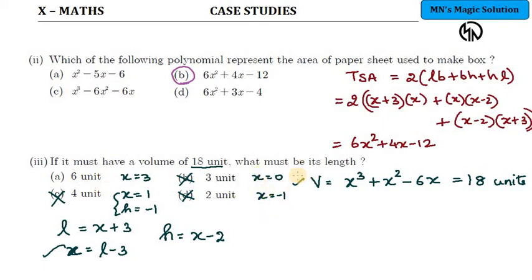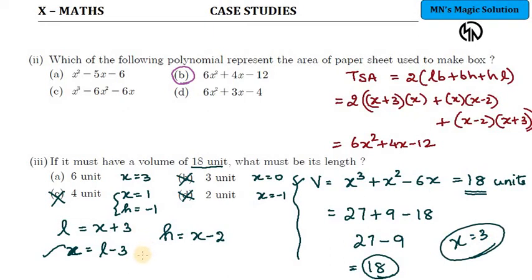For 18 units, if x equals 3. Substitute 3: 3 cubed is 27 plus 3 squared is 9 minus 6 times 3 is 18. So 27 plus 9 minus 18 which is nothing but minus 9. The answer is 18. If I substitute 3 units for x, I am getting the volume as 18 units. Given data gets satisfied for x equals 3. Then length value is x plus 3, so 3 plus 3 which is 6 units. Answer is option A, 6 units for this question.